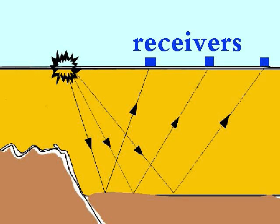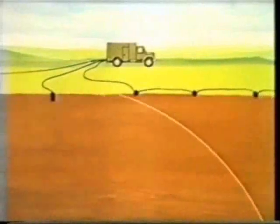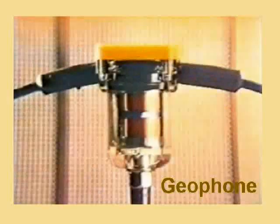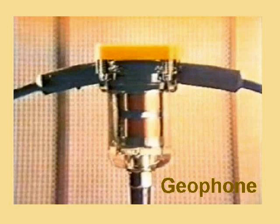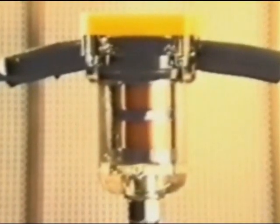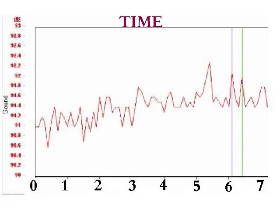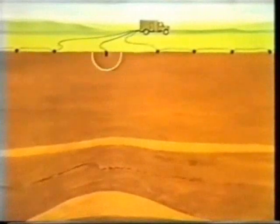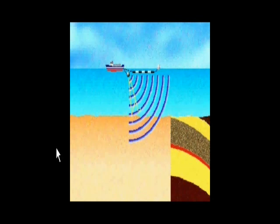The next piece of equipment is called the receiver, and it is used to record the sound waves. The receiver used on land is called a geophone, and the one offshore is called a hydrophone. Both have a timing device to measure the time the sound wave traveled from the energy source to the receiver. On land, we direct the explosion into the rock and then measure how fast it comes back. If the sound travels through hard rock, it will come back much faster than if it is soft rock.